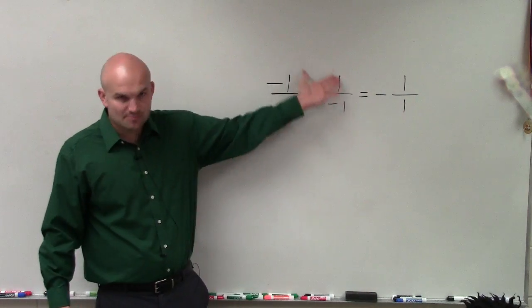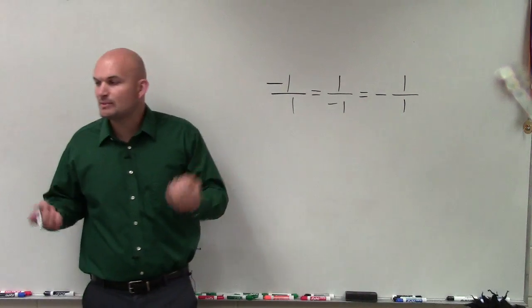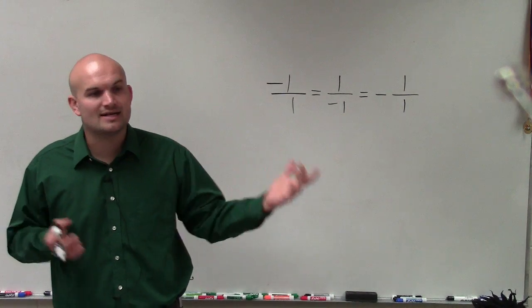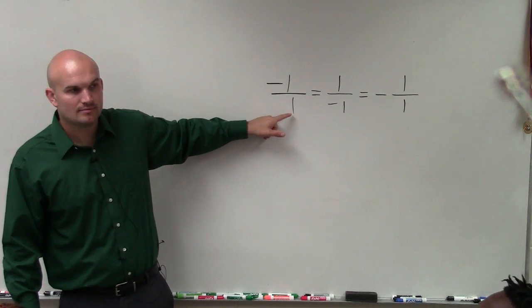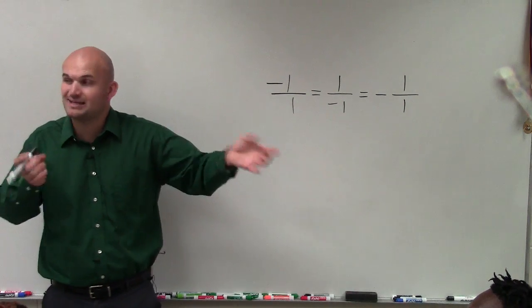So it doesn't matter where you guys place that negative sign, but just remember to take a whole number, to rewrite it as a fraction, just place it over 1, above 1. And then you'd have two fractions that you have to get common denominators.